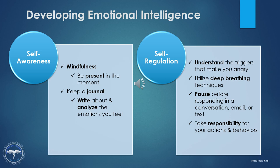You also want to learn self-regulation — how to manage your emotions effectively. If you find that you often get angry, note what triggers that feeling and think about why it happens. Try techniques like deep breathing to calm yourself down. This gives you time to pause before responding to conversations, emails, texts, or requests, so that you don't say something you'll regret. You may also be impacted by negative feelings like anxiety and stress, so do what you can to manage these effectively. Accountability is another important element of self-regulation — take responsibility for your actions and behaviors and make sure they align with your values.